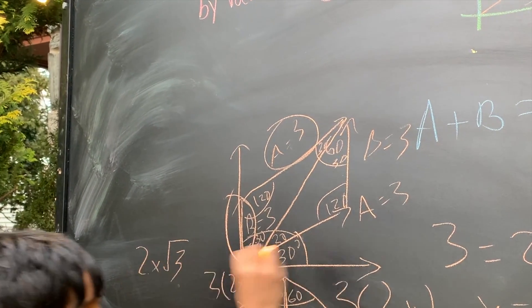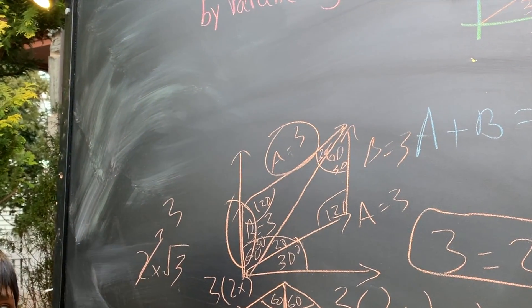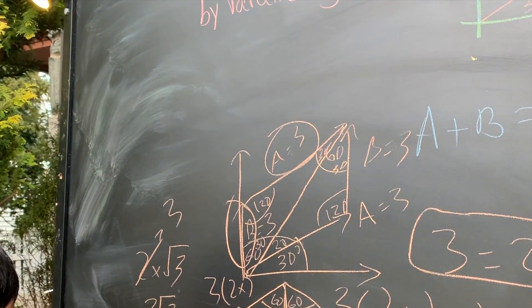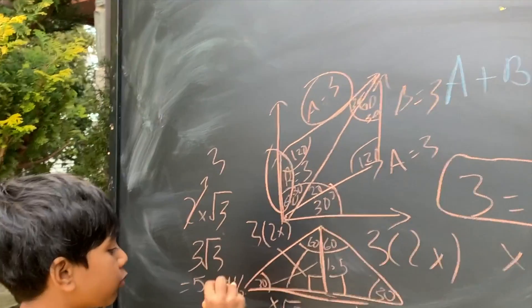So that would be 2x√3. As we know, 2x equals 3. So, we can set this to 3, and then we get 3√3. And if you put it in your calculator, you'll get 5.2.